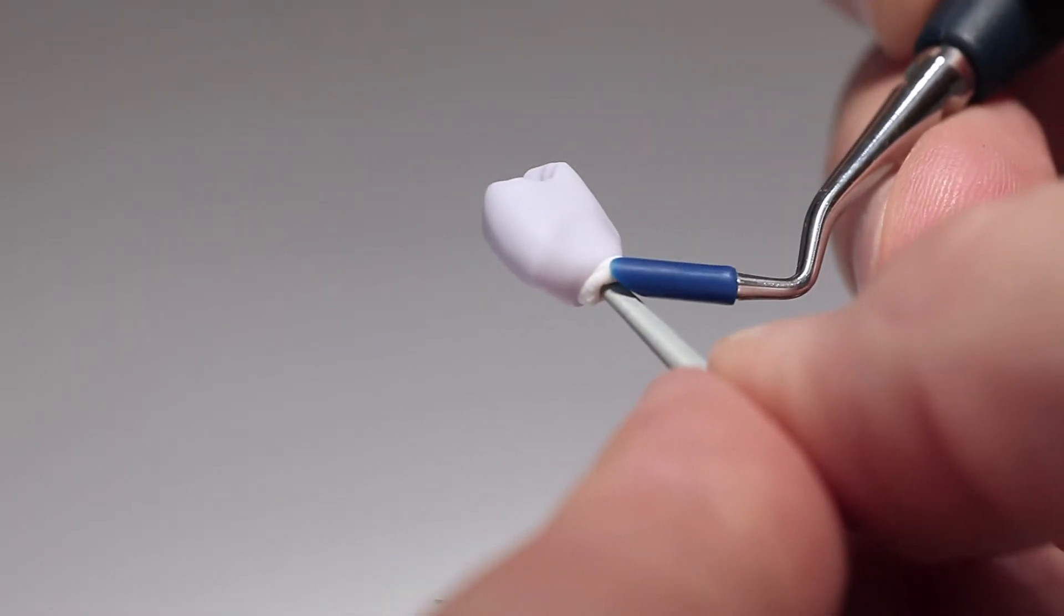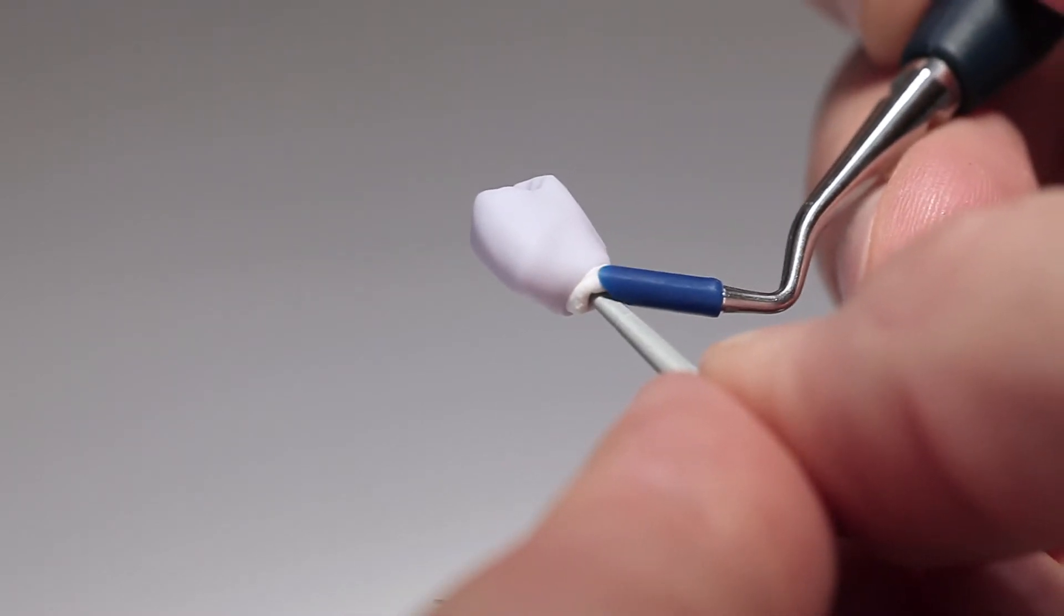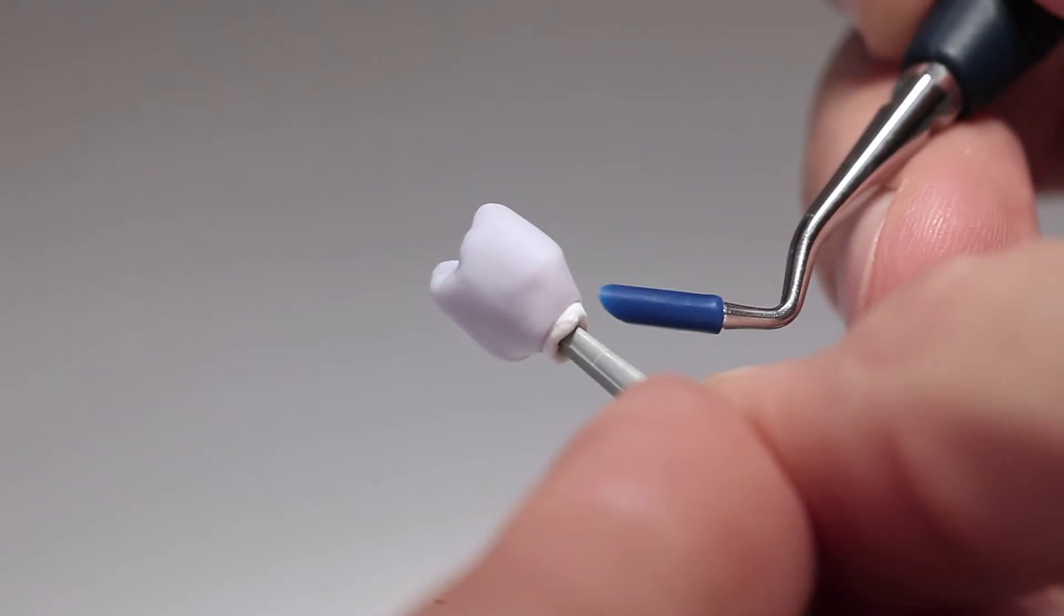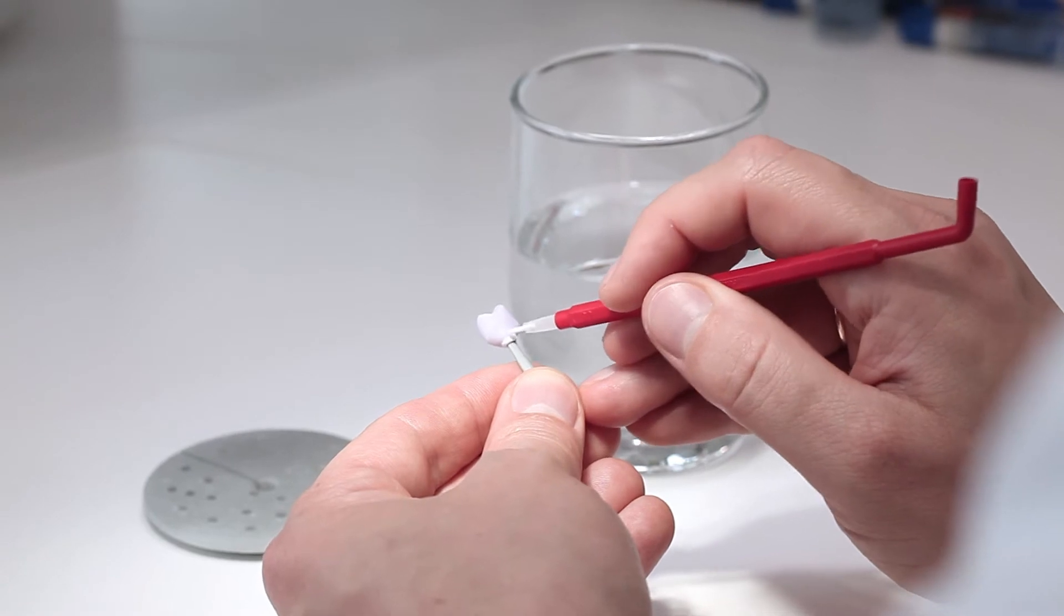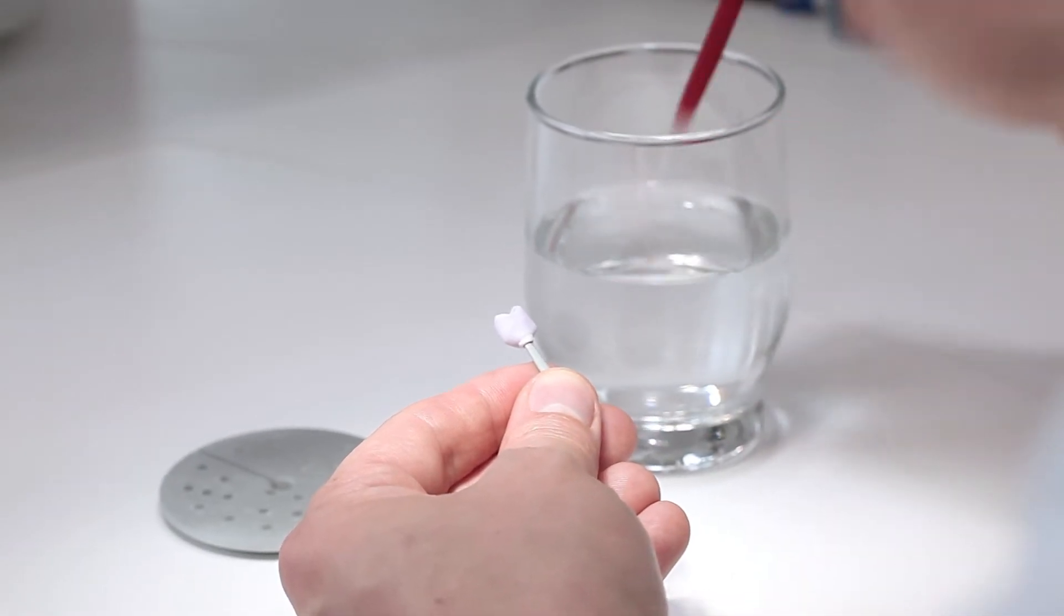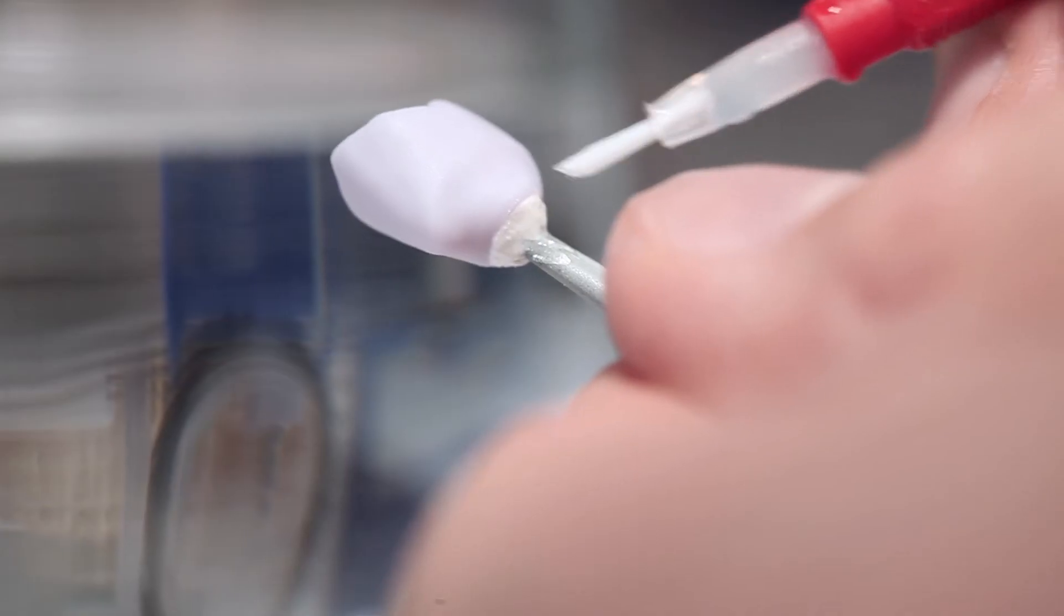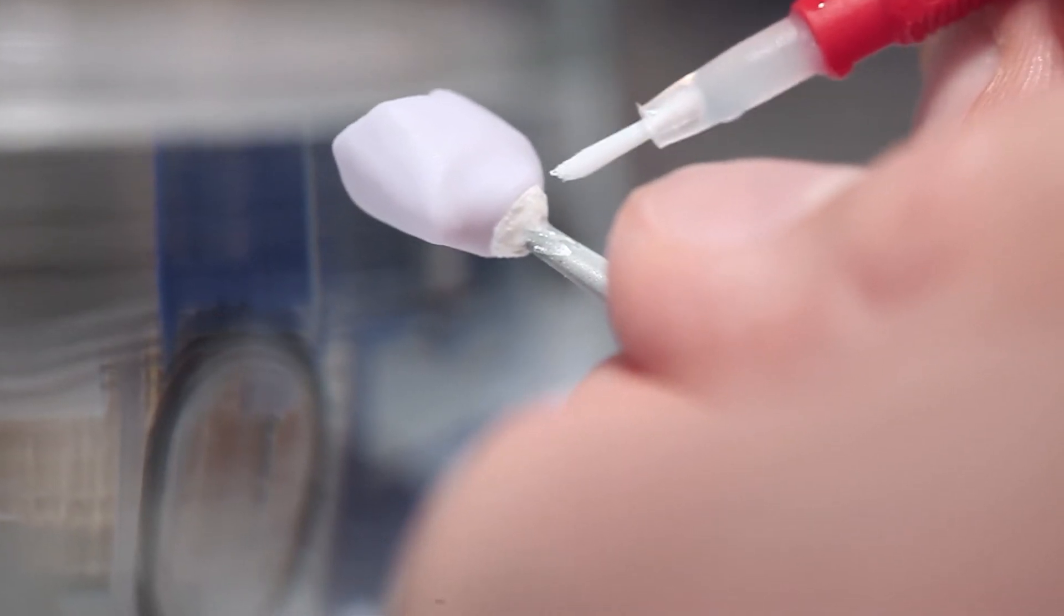Using a plastic spatula, adapt any displaced firing paste from the margin to the support pin so that the pin sits firmly in the paste. Scrupulously remove any residue adhering to the outer surface or occlusal surface using a brush moistened with water. Then, dry the surfaces again.